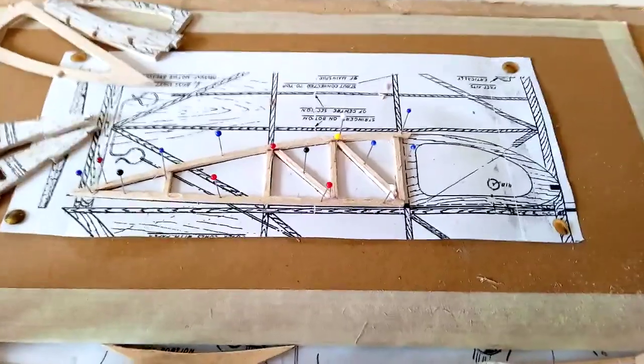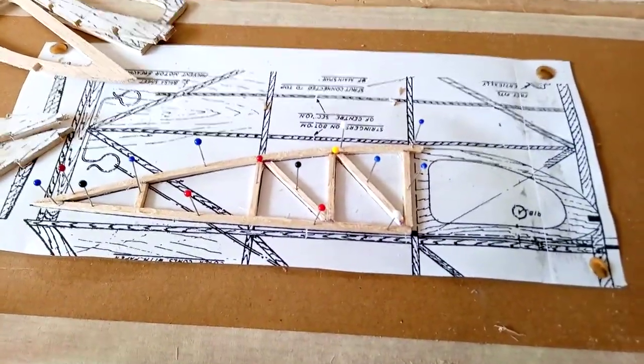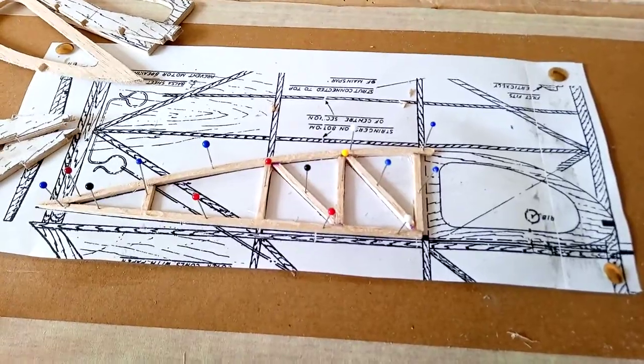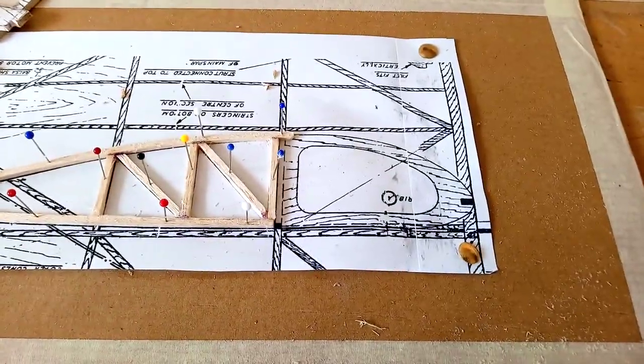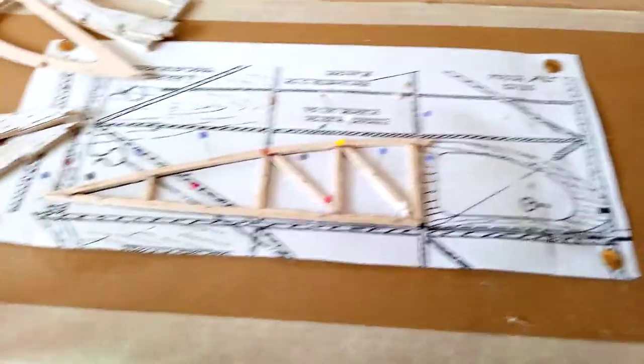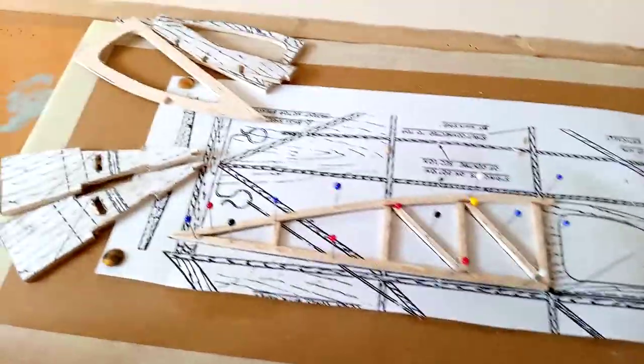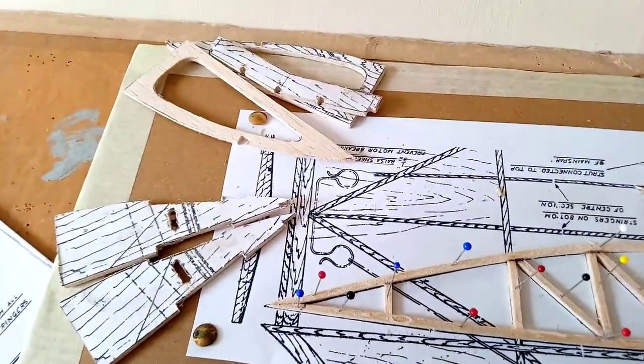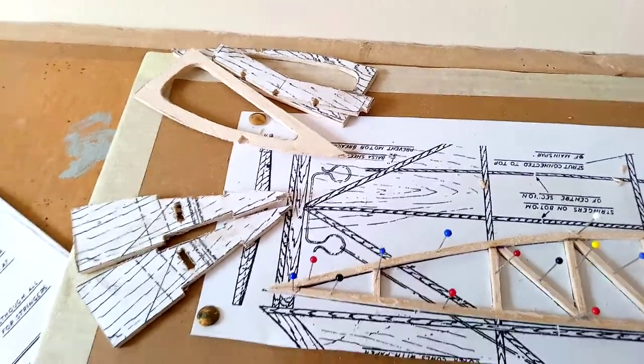Now one of the ribs, this is all to help with the all-up weight, the flying weight, is built out of 3/16 square. You can see there you build one half of the rib and then you build forward and aft. On the ribs, the center section is cut out of the others for the all-up weight.